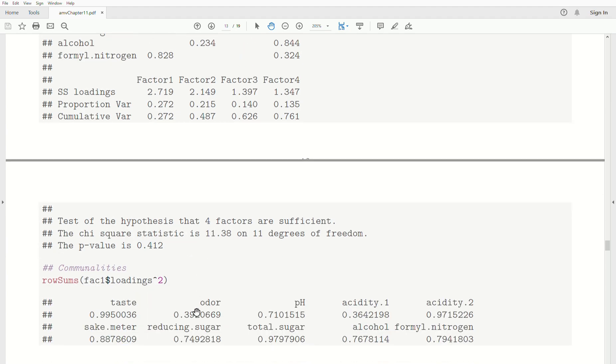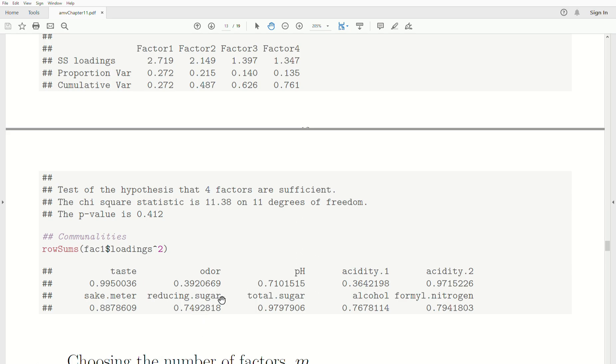You can also calculate the commonalities, which are the variances associated with each variable. So 99% of the variable in taste is accounted for by these four factors, 39% for odor, and that's actually not very big. But you can look at it for each variable.